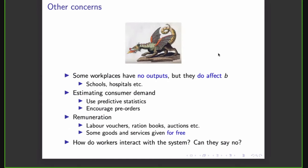There are, of course, various other concerns. Some workplaces have no outputs at all, but they do affect B. So they affect the right-hand side of the system. And this could be schools or hospitals and so on, which basically only demand inputs. They have no corresponding entry in X. You can't turn a dial and tell a hospital to cure more people or whatever, or make more people sick. That's not really how it works. And as Max was touching on, estimating consumer demand is very important. And here we can, of course, use statistics to try and predict things, but we can also encourage people to pre-order stuff. I would expect especially expensive things like a car or whatever, just put in a pre-order, maybe get a lower price.